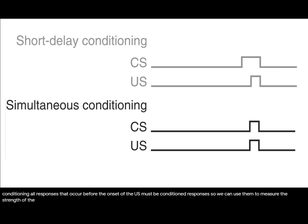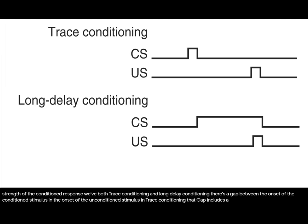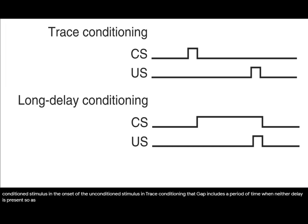With both trace conditioning and long delay conditioning, there's a gap between the onset of the conditioned stimulus and the onset of the unconditioned stimulus. In trace conditioning, that gap includes a period of time when neither is present, so establishing a conditioned response involves memory in the sense that the individual must remember that the CS preceded the US. As you might guess, longer delays tend to produce weaker conditioned responses.